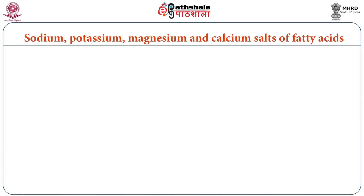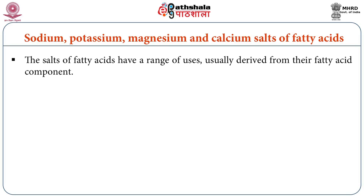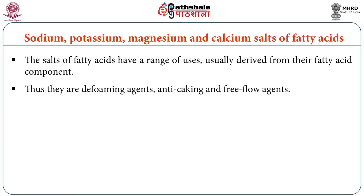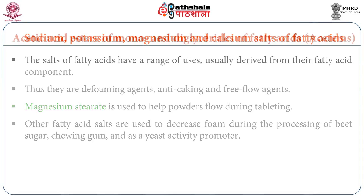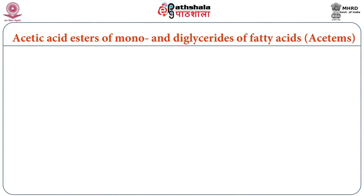The next ingredients are sodium, potassium, magnesium and calcium salts of fatty acids. These salts have a range of uses usually derived from their fatty acid component, and they can also act as free-flow agents. Magnesium stearate is used to help powder flow during tableting. Other fatty acid salts are used to decrease foam during the processing of beet sugar, chewing gum, and as a yeast activity promoter.